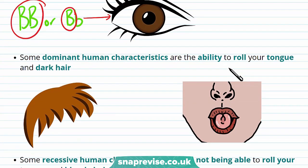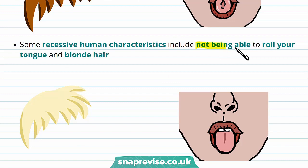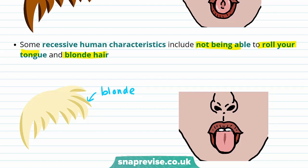Now let's look at some dominant human characteristics. One of them is the ability to roll your tongue, having freckles, and having dark hair. Some recessive human characteristics include not being able to roll your tongue and blonde hair. This means in order to have blonde hair, you have to inherit both the alleles coding for this characteristic from your parents.